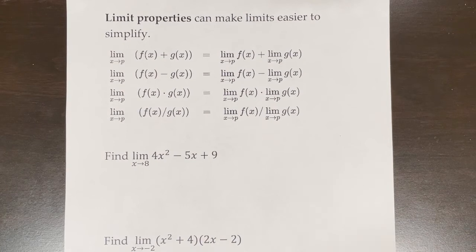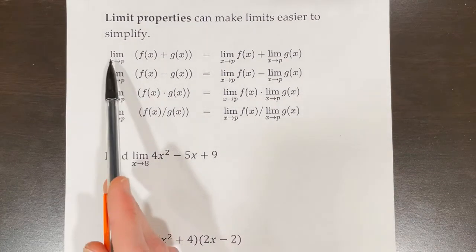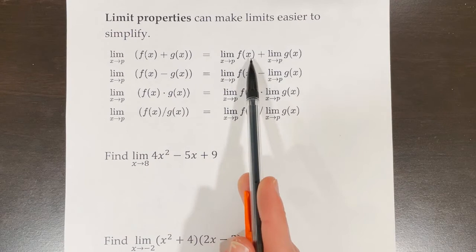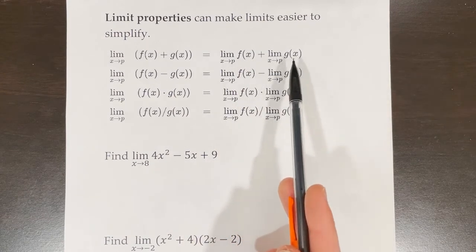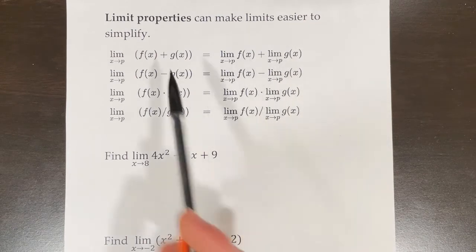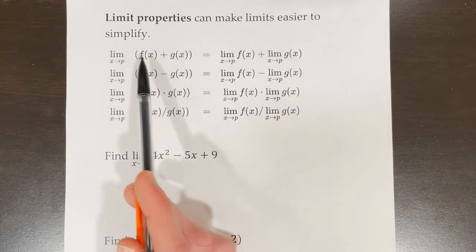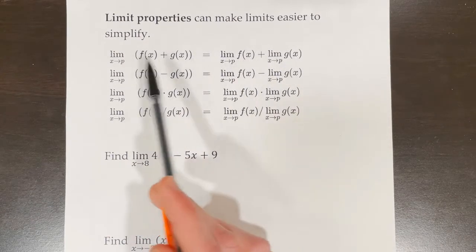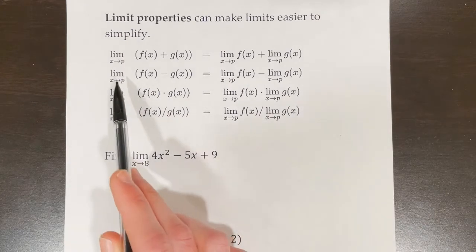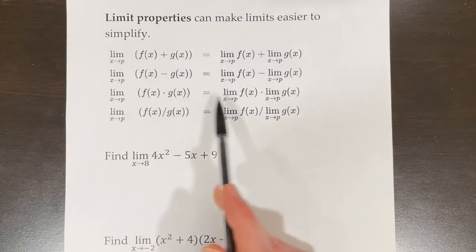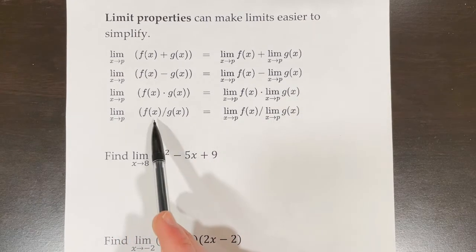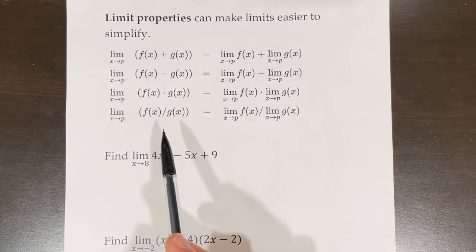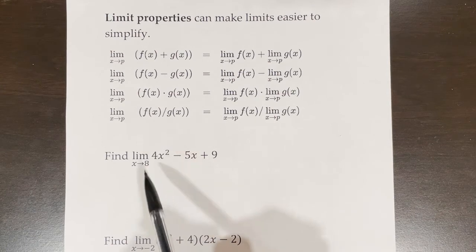Limit properties can make limits easier to simplify. For example, the limit of f(x) plus g(x) as x goes to p equals the limit of f(x) as x goes to p, plus the limit of g(x) as x goes to p. You can break apart limit terms into separate terms with the same limit out front. The same concept applies for subtraction, multiplication, and division — though division requires extra care because of rational functions, holes, and vertical asymptotes.